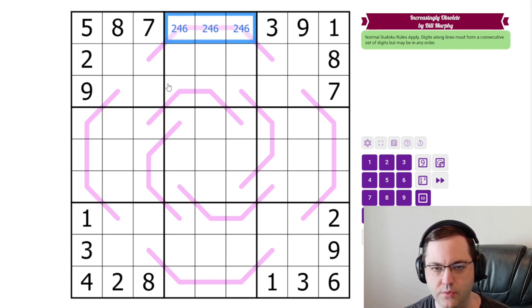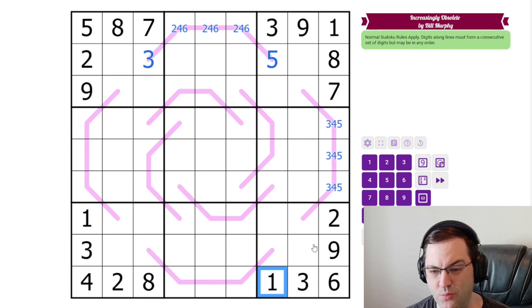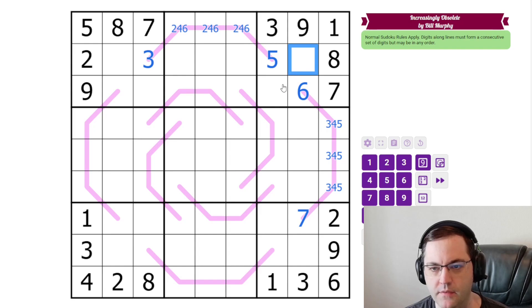The top row is missing two, four, and six. In order to have a consecutive set of digits on this line, we need the digits in between two, four, and six. So we need a three and a five, and they have to go in that order because of the given digits. These are three, four, five. On this end, we can't have a two or a six. We also can't have a one. So the only thing this can be is a seven with a six up here. That's going to give us four and two like this.